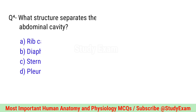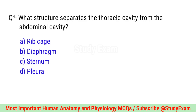Question number four. What structure separates the thoracic cavity from the abdominal cavity? Correct option is D. Diaphragm.